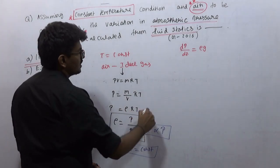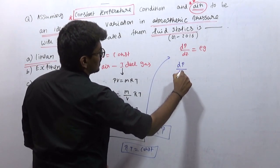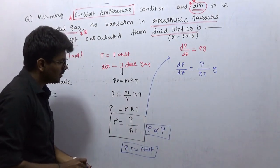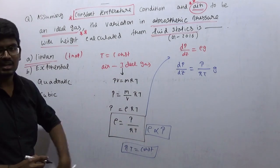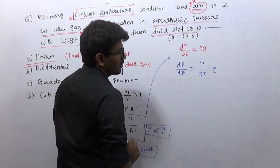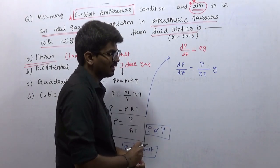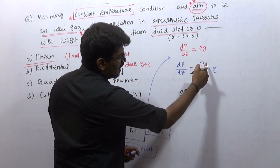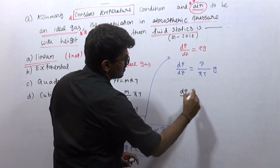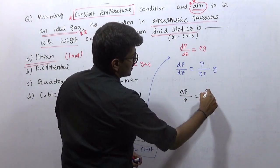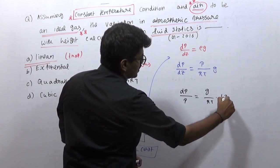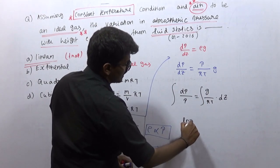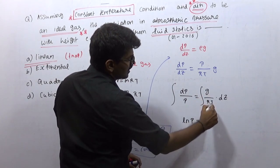Now substitute ρ = P/(RT) into the hydrostatic equation dp/dz = ρg. This gives dp/dz = (P/RT)·g. Rearranging by variable separable method: dP/P = (g/RT)·dz. Since g, R, and T are all constants, g/RT can be taken outside. Integrating both sides: ln(P) = (g/RT)·z + C.